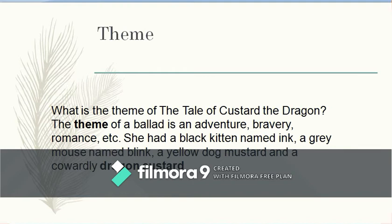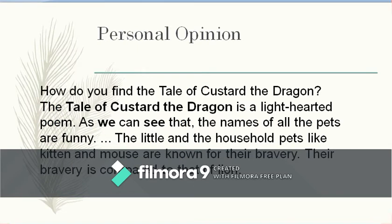The theme of the ballad is adventure, bravery, and romance — where 'romance' here means the kind of excitement it generates in the reader. The characters include a black kitten named Ink, a grey mouse named Blink, a yellow dog named Mustard, and a cowardly dragon named Custard — and that is the kind of excitement or interest the poem creates.